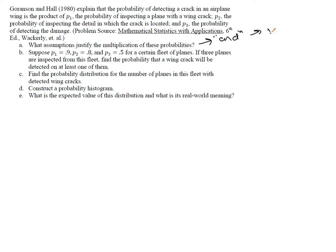And so, either we assume independence of these three events, or we say that there's a 90% chance in part B that the plane is inspected. Given that it's inspected, there's an 80% chance that that particular part of the wing is inspected. And given that, then there's a 50% chance that the actual damage is detected in that part.